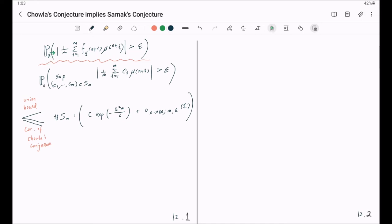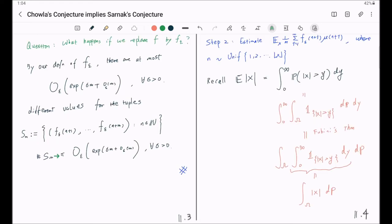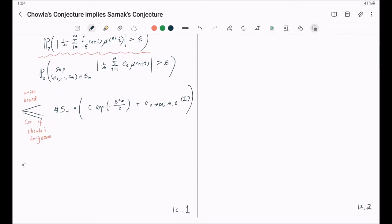I should emphasize the dependence on x in here. I hope this inequality is now clear to you. Now, recall that we already have an estimate for the cardinality of S sub m. We have this bound. So to continue, this will be bounded by times. Let me just copy a thing here.